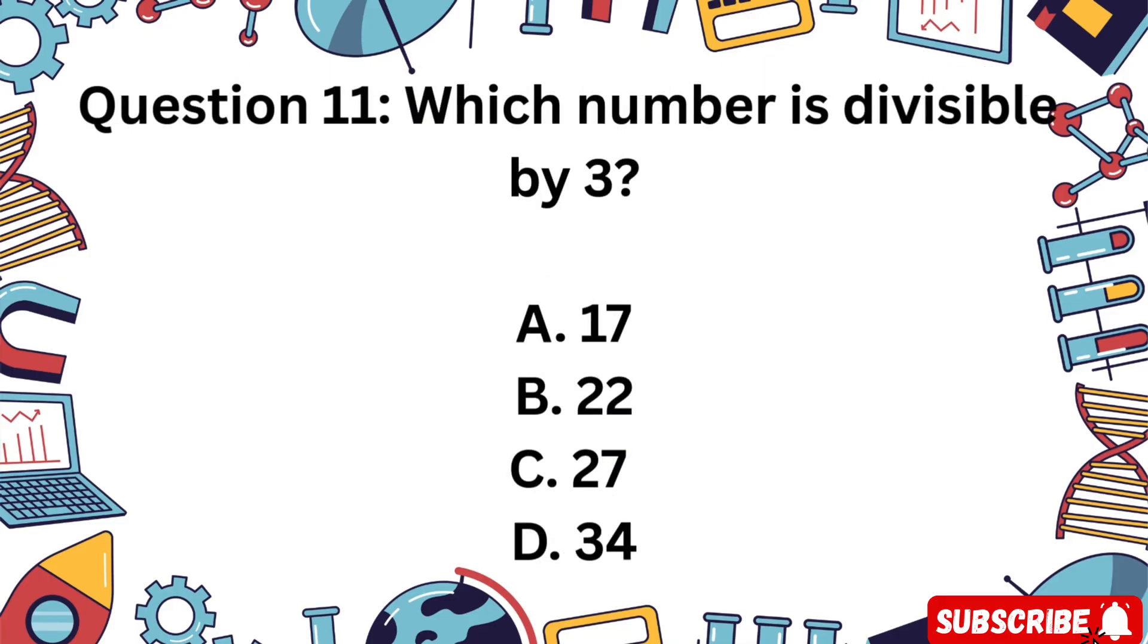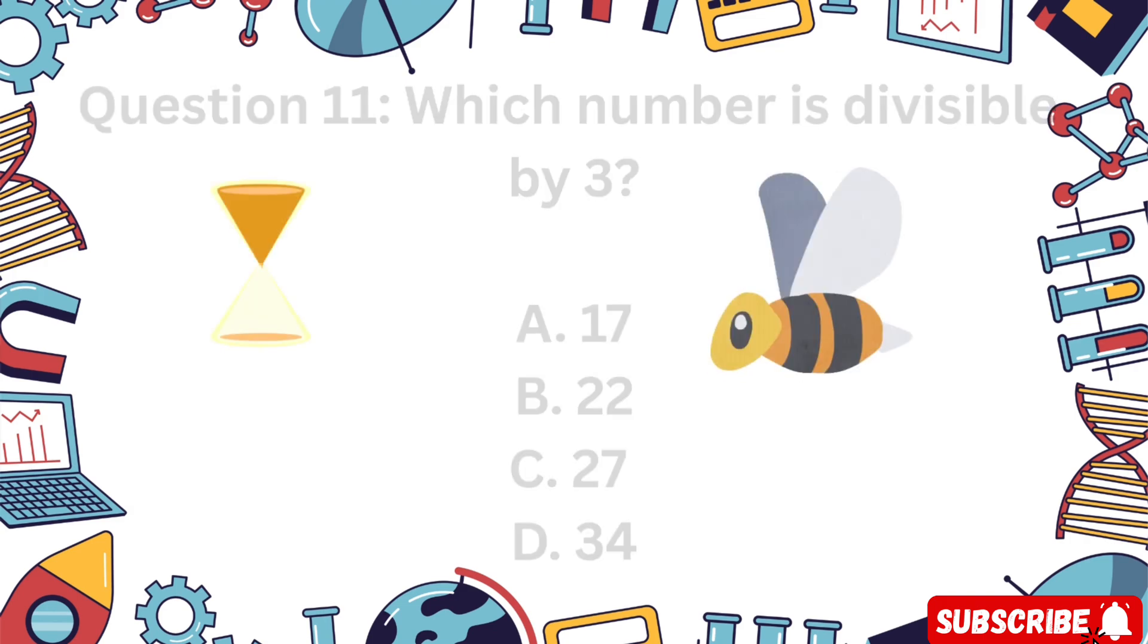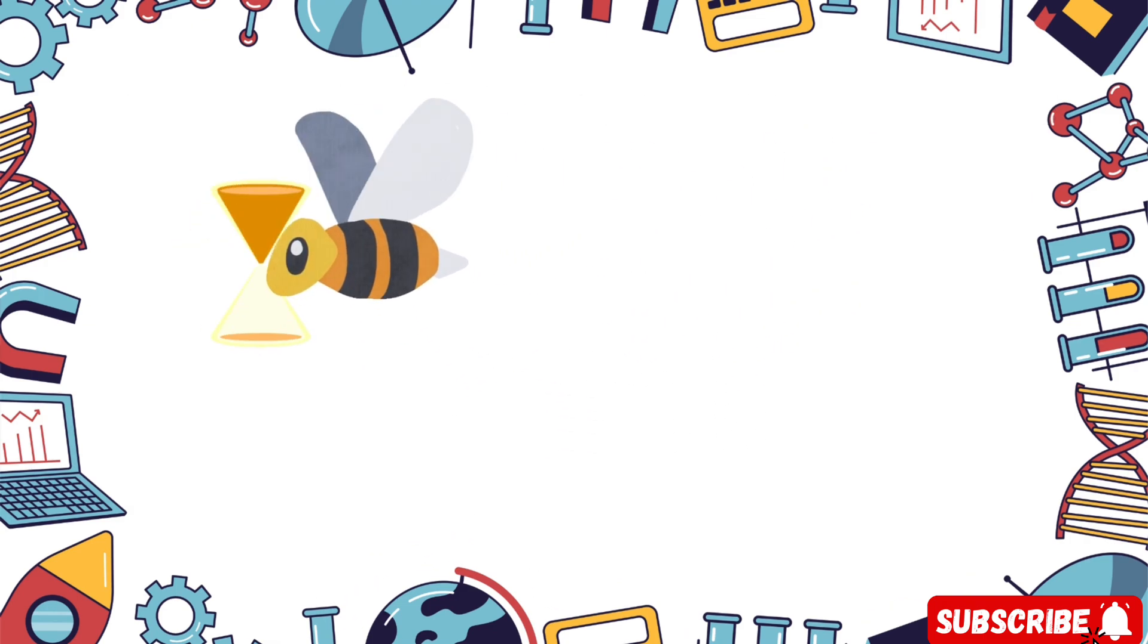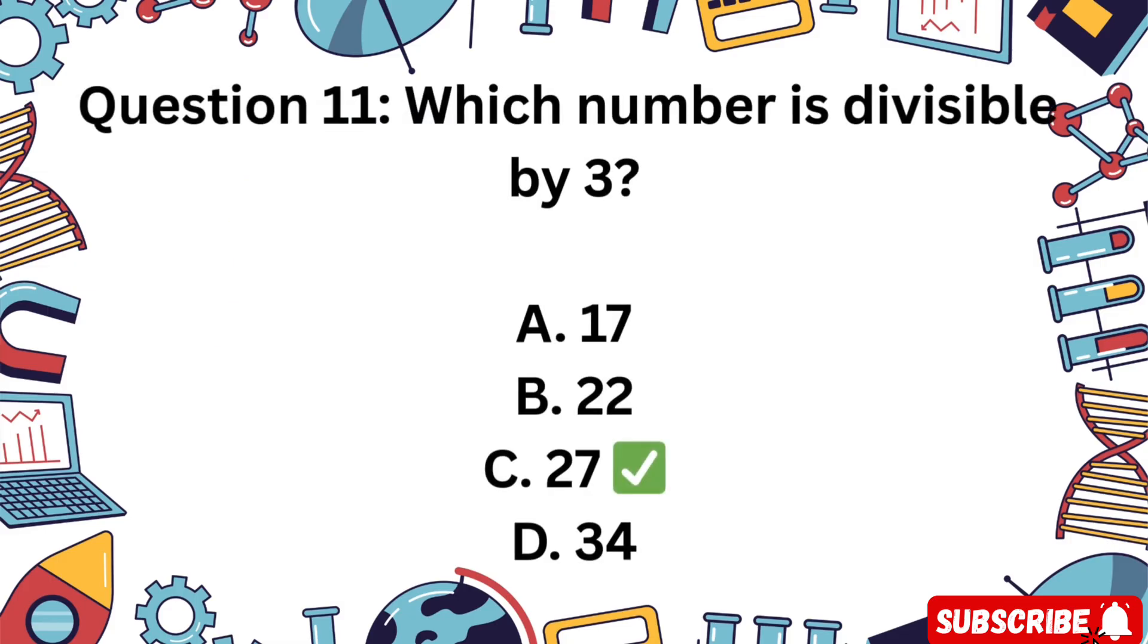Question 11: Which number is divisible by 3? Is it A 17, B 22, C 27, or D 34? Great job. C is correct. 2 plus 7 equals 9, and 9 is divisible by 3.